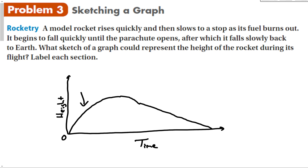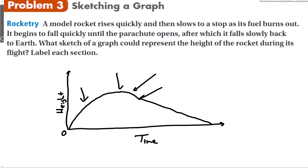Here's the area where the rocket is rising, then the peak. Then it begins to fall quickly, and right there the parachute opens and it starts to go much more slowly back down to Earth.